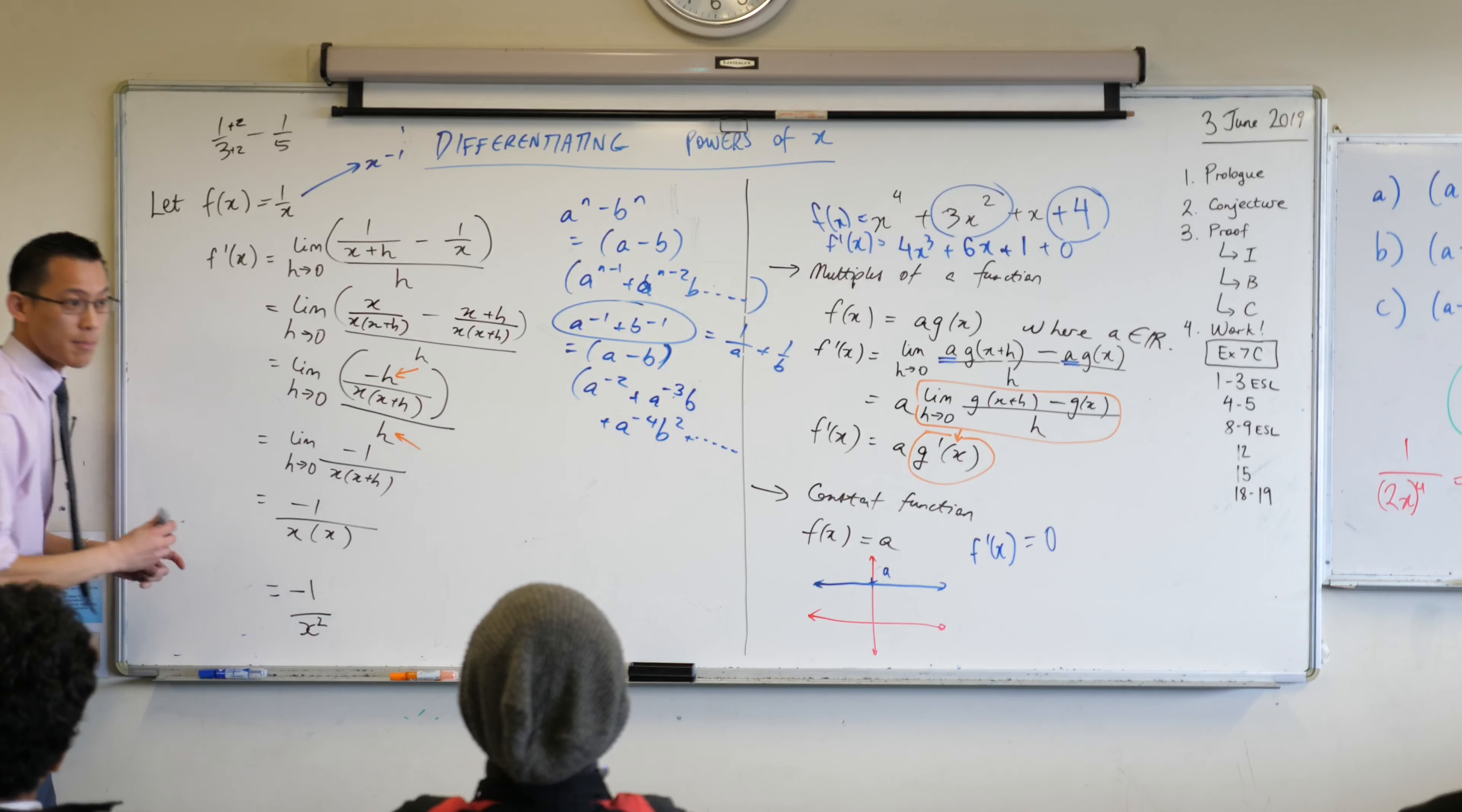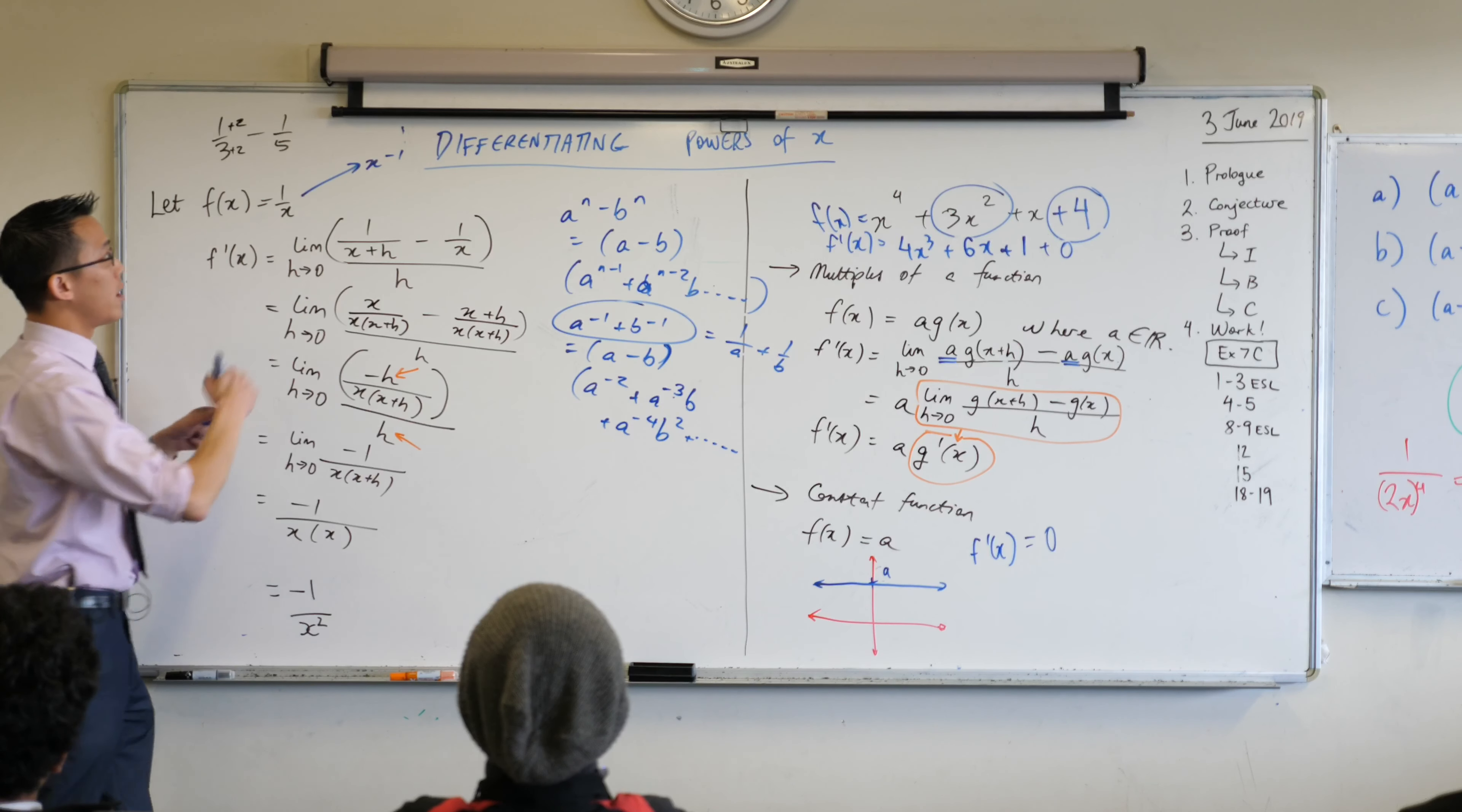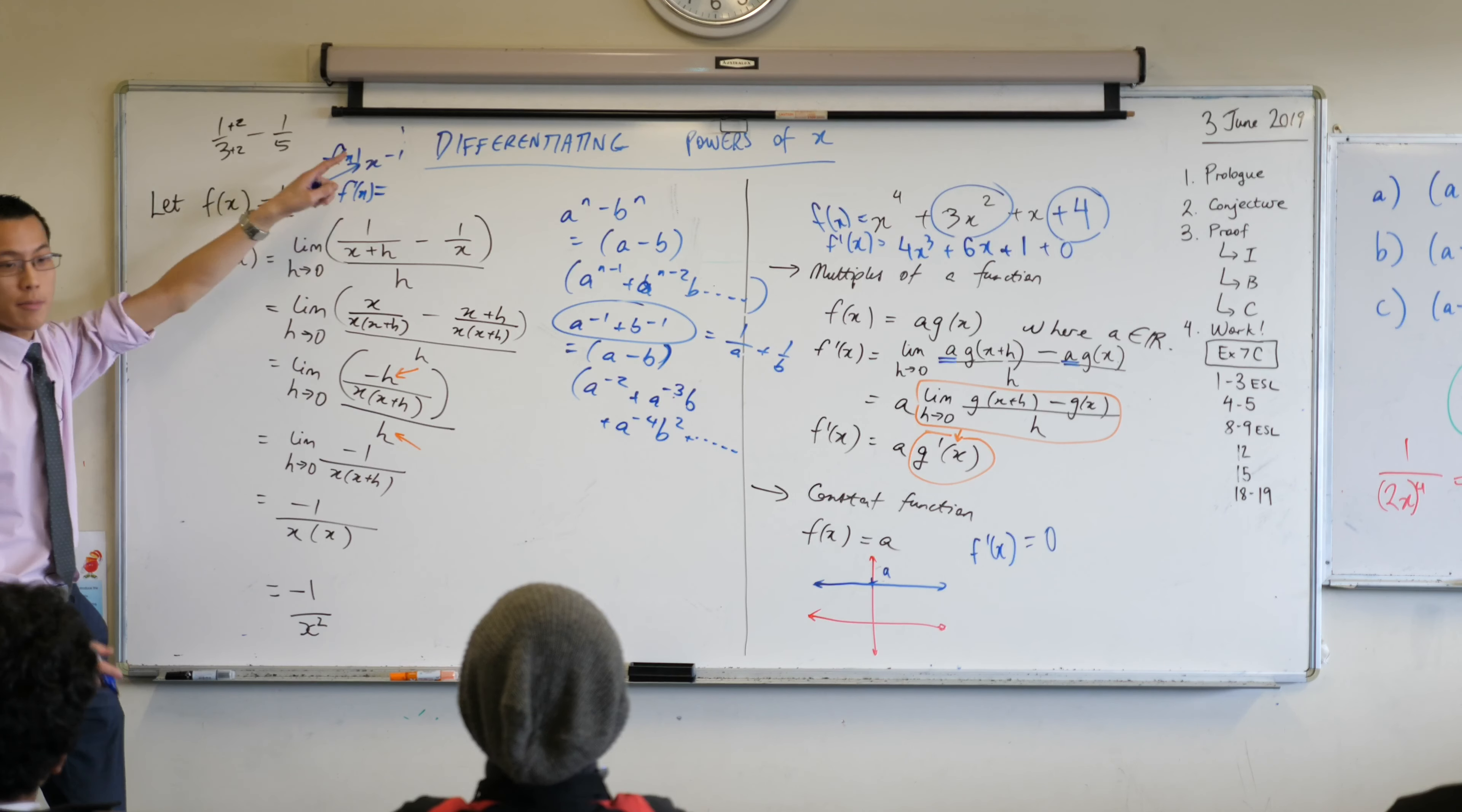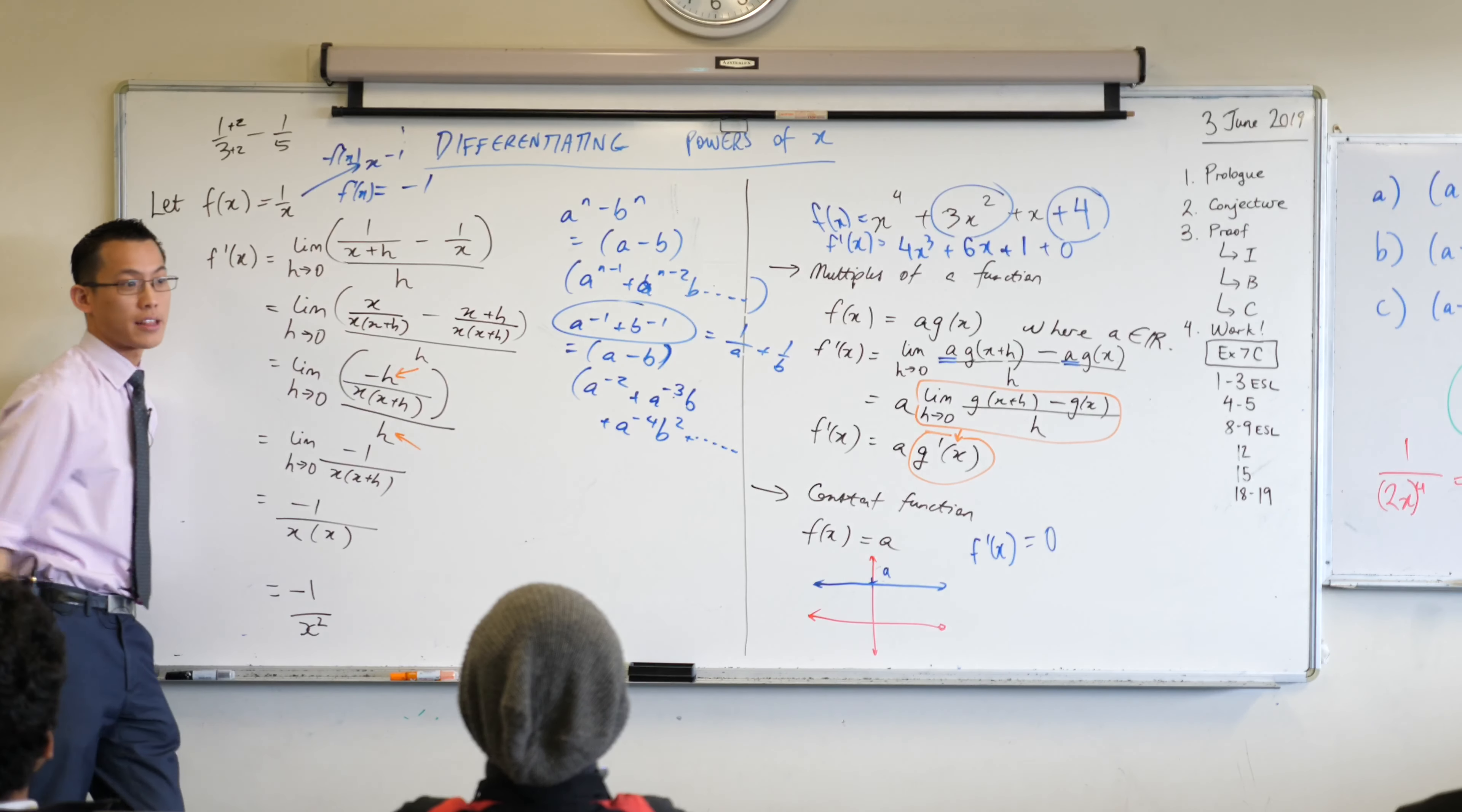Now let's think about this. Let's go back to our rule, our magical rule. We said what if we wrote it like this? Well if this is f of x, what does f dash x become if you think about the rule that we established?